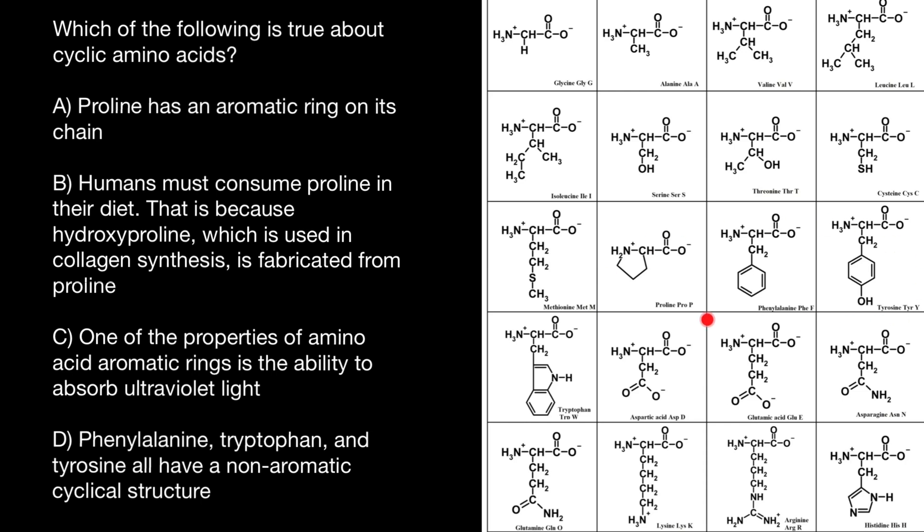Some students confuse which of them are aromatic groups and which are not. Take a look. Aromatic groups have hexagons, so for example, phenylalanine and tyrosine have hexagons, and tryptophan also has hexagon.